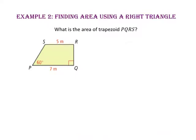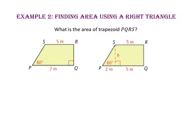In Example 2, we will find area using a right triangle. What is the area of trapezoid PQRS? We are given the lengths of the two bases, 5 meters and 7 meters; however, we do not know the height. Since the height is always perpendicular to the bases, if we draw in the height, we will create a 30-60-90 triangle. Opposite sides of the rectangle formed are congruent, so that segment is 5 meters, making the remainder 2 meters the short leg of the 30-60-90 triangle. The height, or the long leg, is the square root of 3 times longer than the short leg.